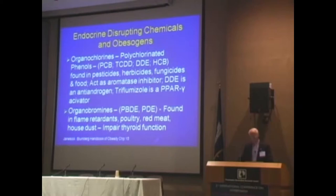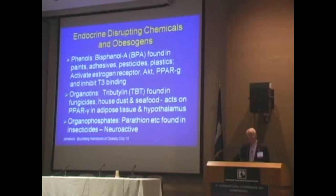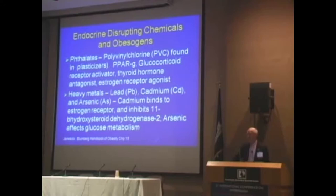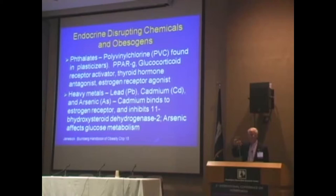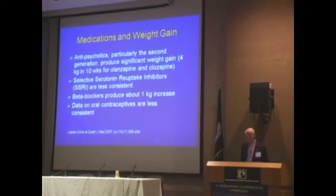Organochlorines and polychlorinated phenols are among these, as are the organobromines, bisphenol A — which has a number of receptors, particularly the estrogen receptor — organotins, organophosphates, phthalates, and heavy metals. I suspect we will find these are playing a larger and larger role in modulating our early environmental exposures. What mothers are eating is crossing the placenta, and many of these are very lipid-soluble compounds entering the brain. The brain in utero is a very responsive organ that can be programmed, and I suspect these are playing more of a role than we suspect.